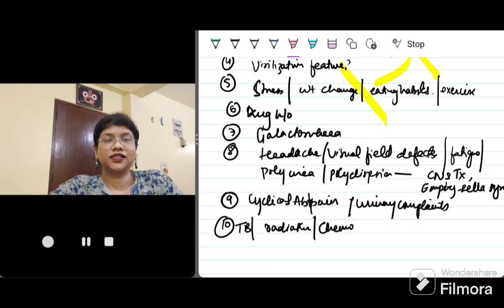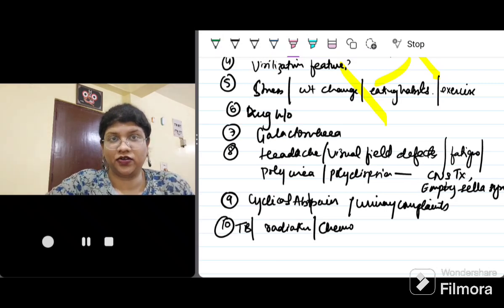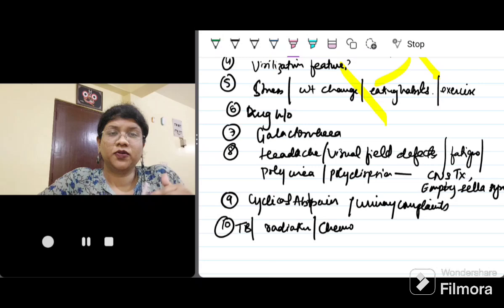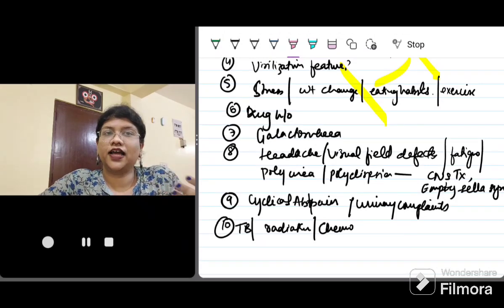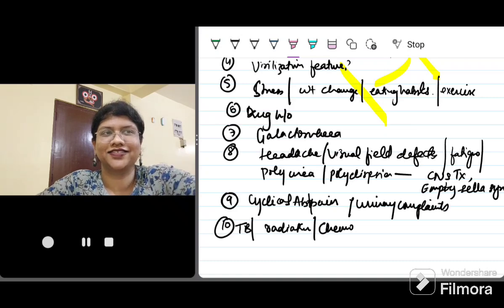So I think with this I have just concised the definition, the causes, the evaluation and what is the important history and why we take these history for a case of primary amenorrhea. I hope this concept is very clear because unless the concept is clear, everyone finds it very difficult to analyze a patient. If any other doubt you have, please write in the comment section and I will be glad to answer that. Thank you and have a great day ahead.